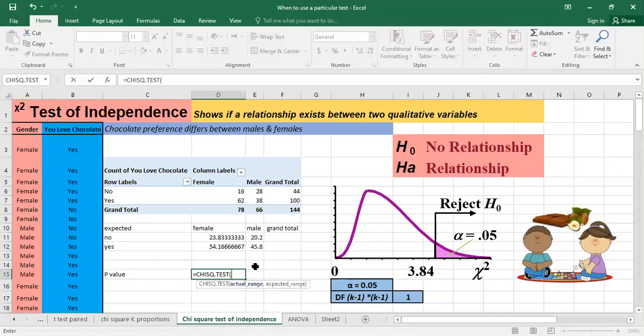And what we are doing we are comparing the actual with the expected. As you can see here the p-value that we got from this test is 0.004.